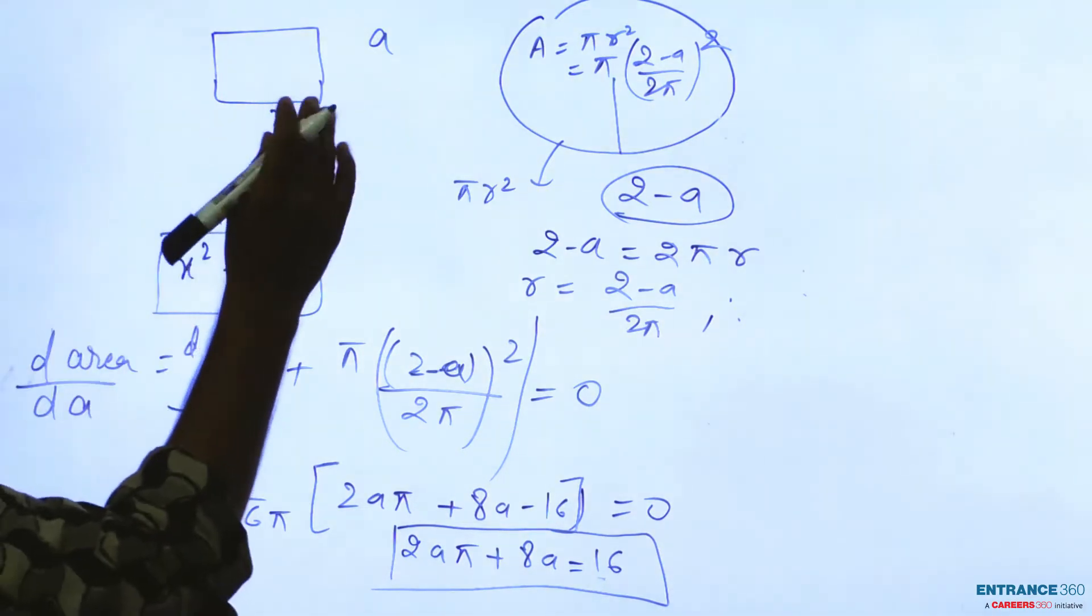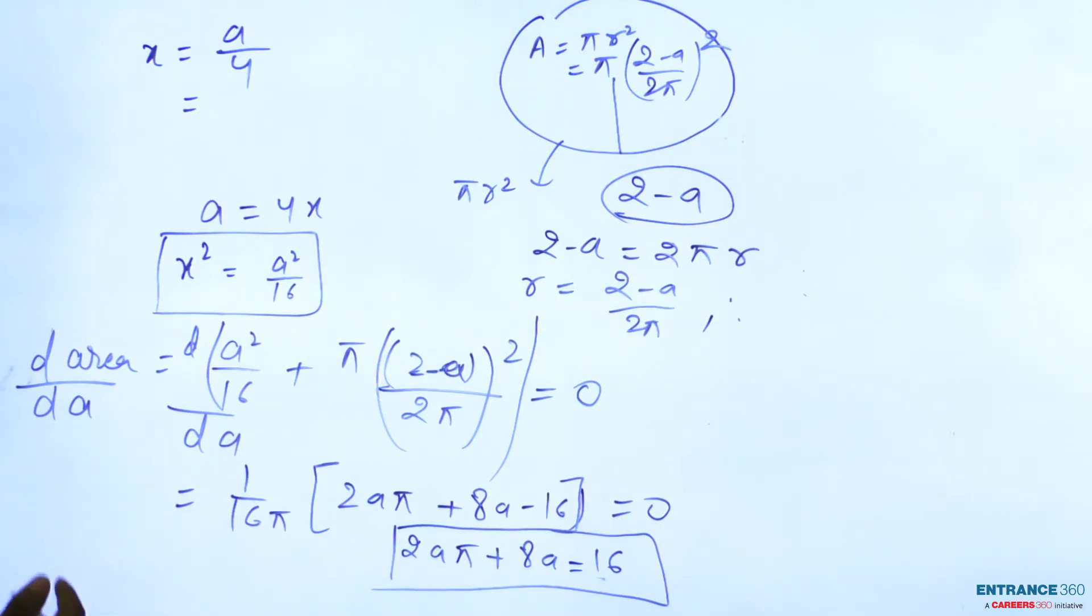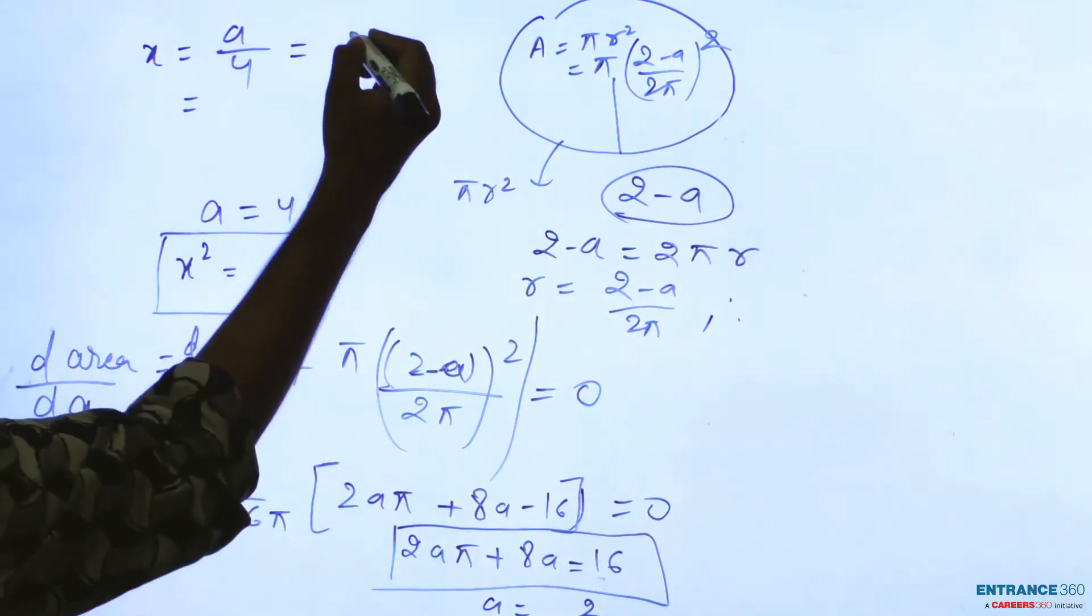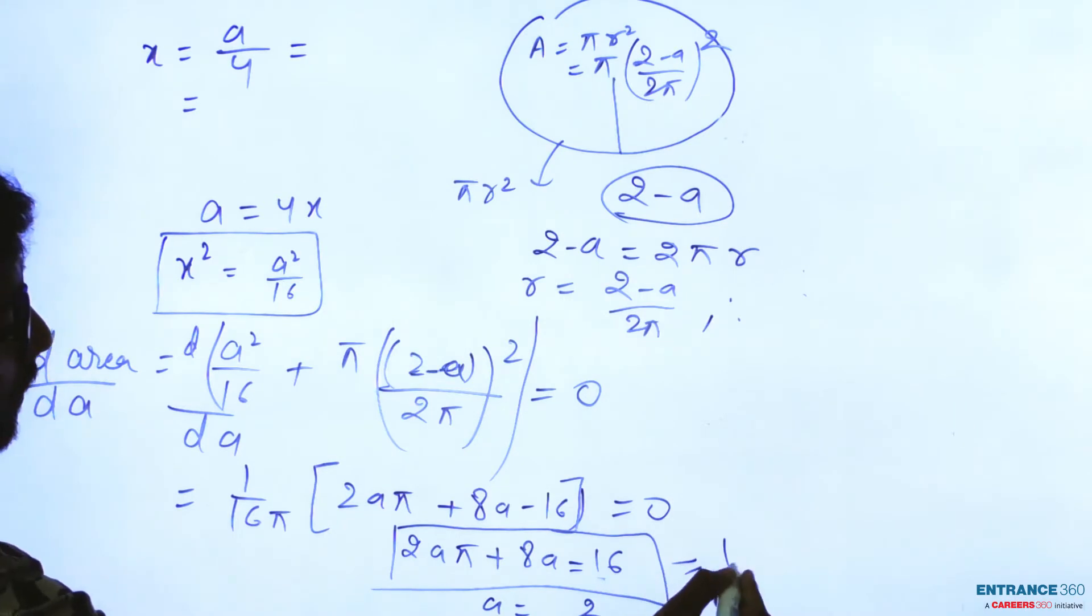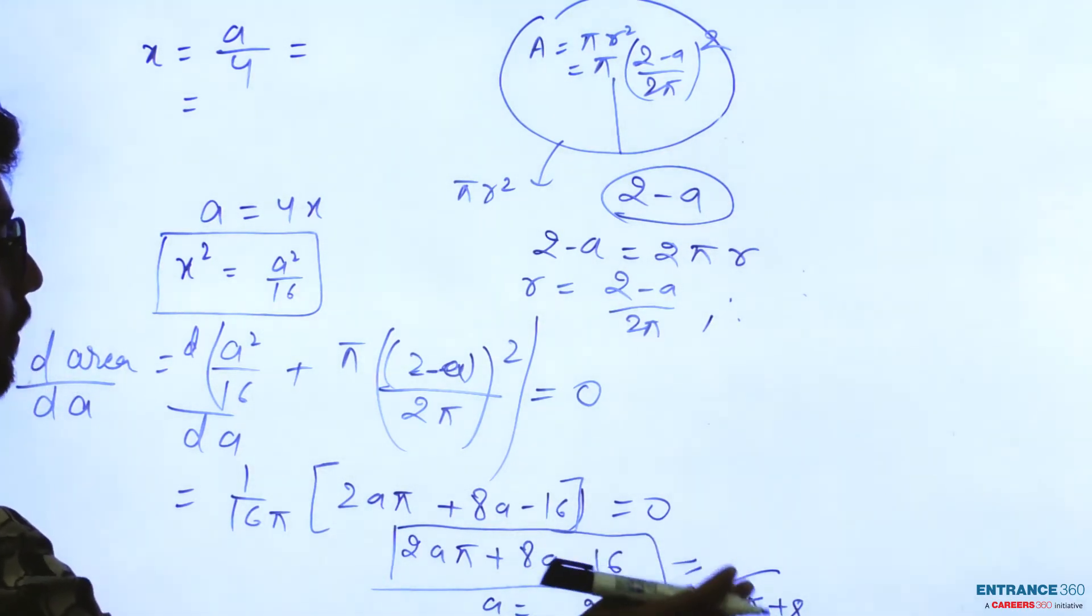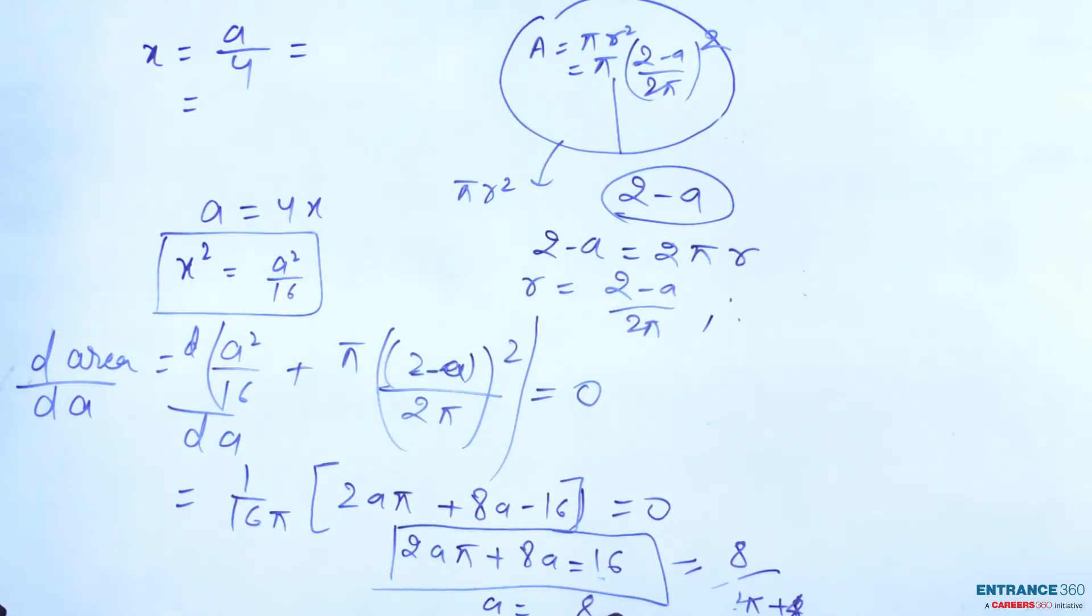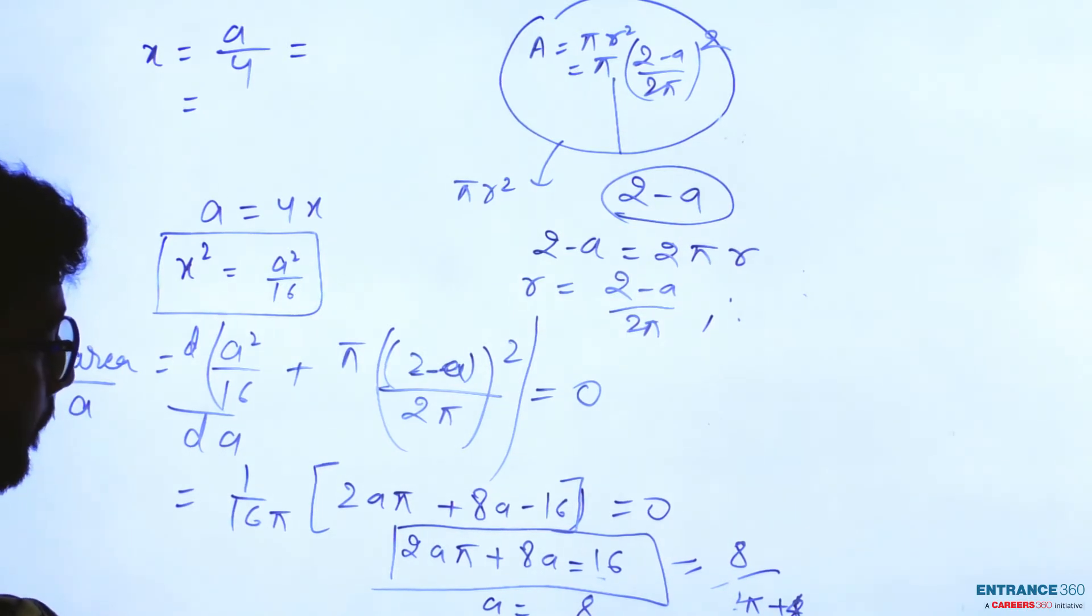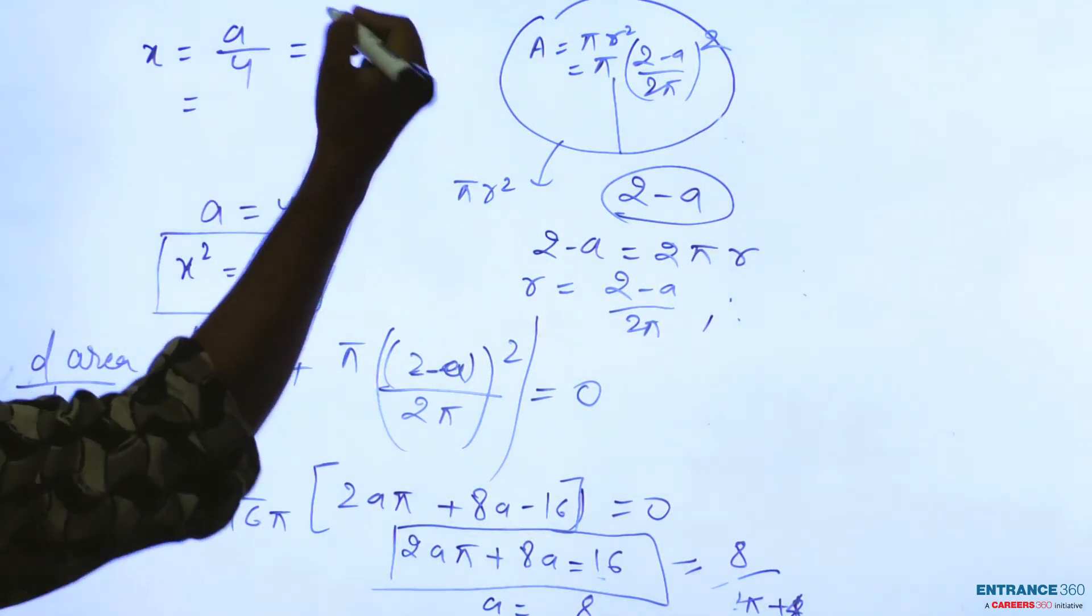Then you can write here x equal to a by 4, and a will be equal to 2 by pi plus 4. Then you can write here a will be equal to 16 by 2 pi plus 8. Then if you take a common 2, it will be equal to 8 by pi plus 4.